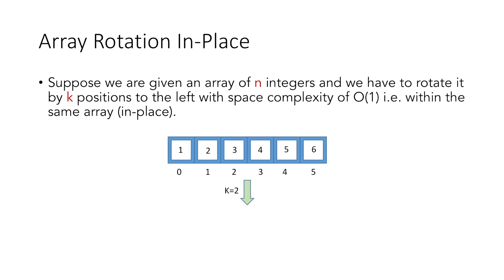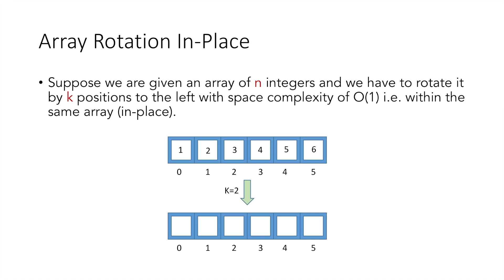We have to rotate each element two positions to the left, which means that the element at index 0 would be 3, because when we shift 3 two positions to the left it comes to index 0. Similarly, 4 will come at index 1, followed by 5, then 6 at index 3. Since there are no more elements after 6, we start taking elements from the beginning in a cyclic way, so index 4 gets element 1 and index 5 gets element 2.